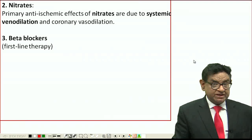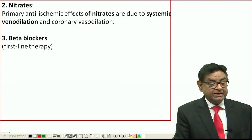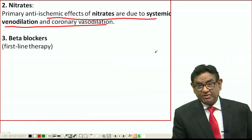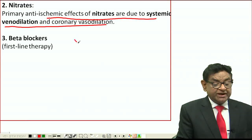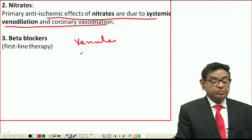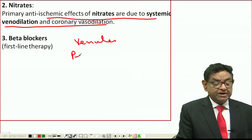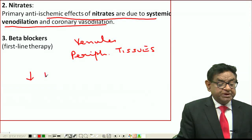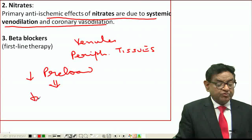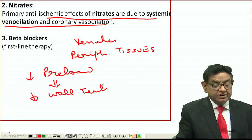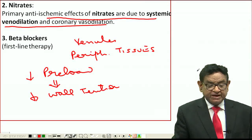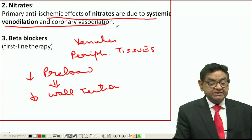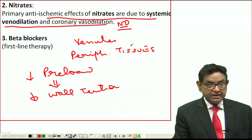The second drug class is nitrates, which have a double effect: an anti-ischemic effect due to systemic venodilatation as well as coronary vasodilation. They dilate peripheral venules so blood pools into peripheral tissues, reducing preload and wall tension in the myocardium. They also act as coronary vasodilators through release of nitric oxide, giving a dual advantage in coronary artery disease.